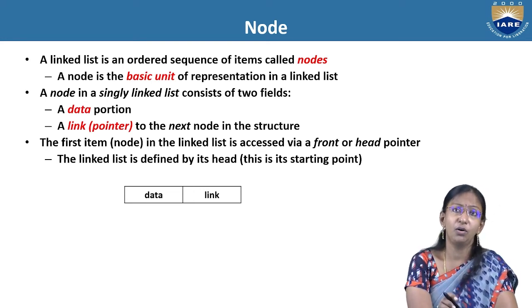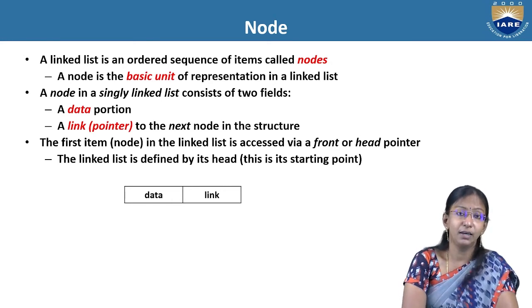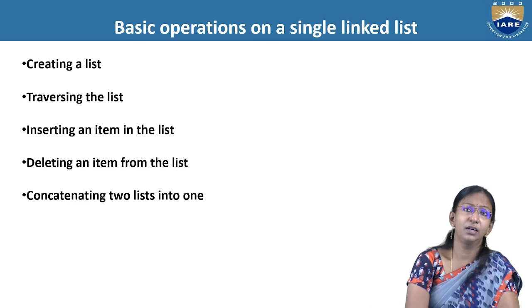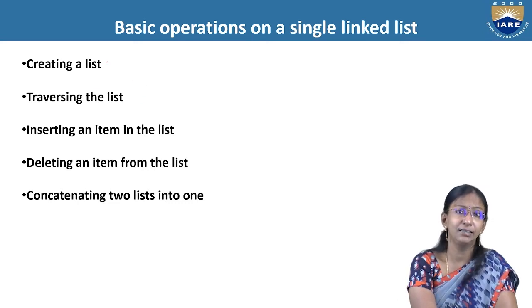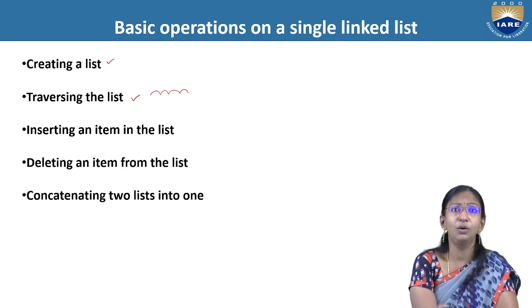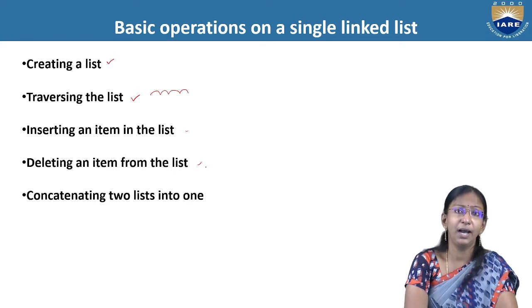In a linked list, an ordered sequence of items are called nodes. A node is the basic building block of a linked list, which has two portions: one is the data portion, the other is the link. The link holds the address of the next node. The basic operations on a single linked list are: creating a linked list, traversing the list by hopping from node to node and displaying data, inserting an element, deleting an element, and merging two lists into one.